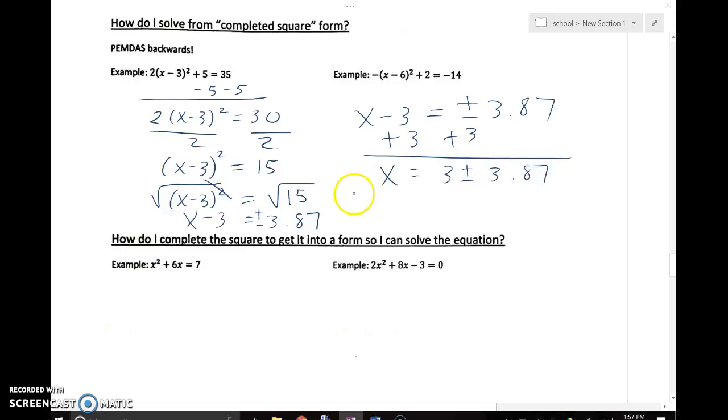That splits me into two scenarios. x equals 3 plus 3.87, or 6.87, or x equals 3 minus 3.87, which is negative 0.87. We write those as intercepts: (6.87, 0) and (-0.87, 0). Those are the two solutions to this quadratic equation, the two x-intercepts where the parabola crosses the x-axis. That's how I would solve something in vertex form.